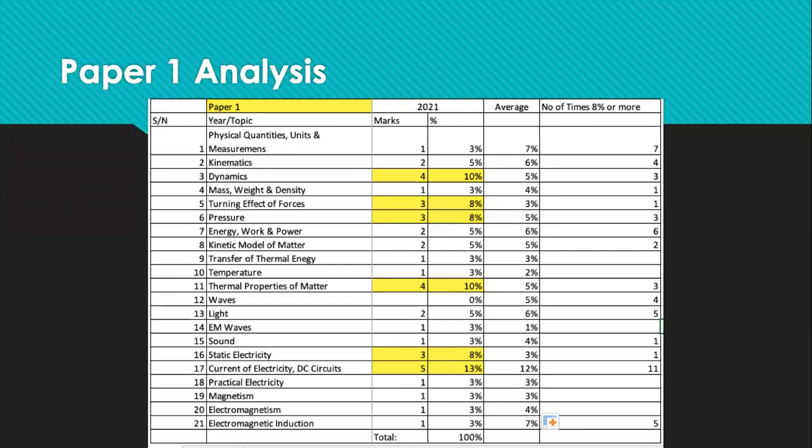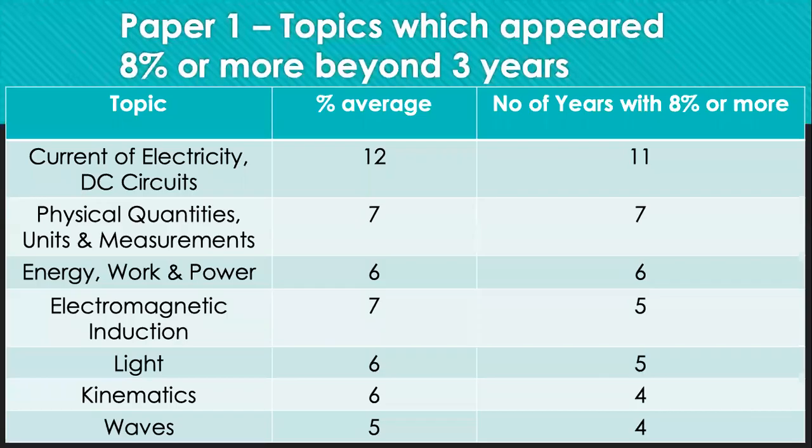Now, this is a spreadsheet I did to analyze the trend of the questions asked over the past 11 years from 2011 to last year 2021. And I classify the topics according to the average percentage of the questions appear over the past 11 years and the number of times the question appear at least 8%.